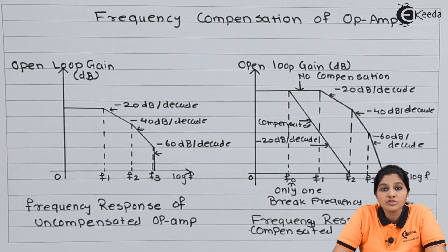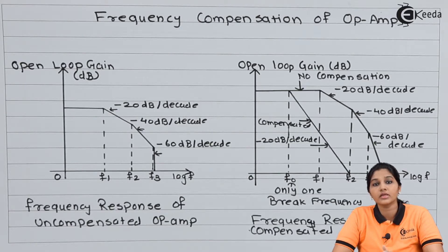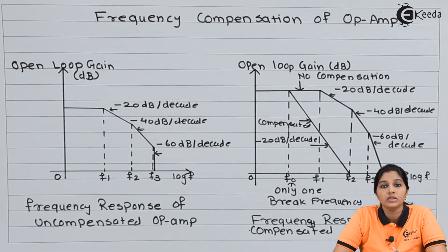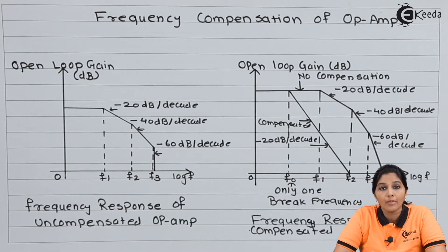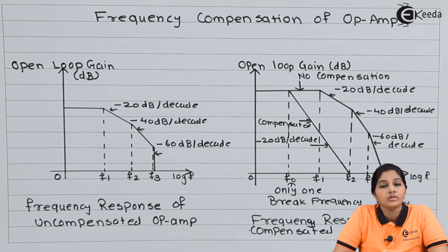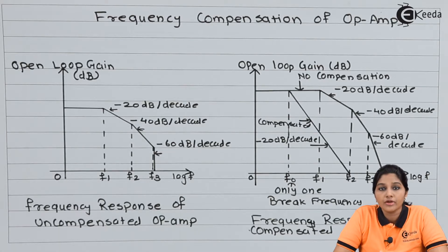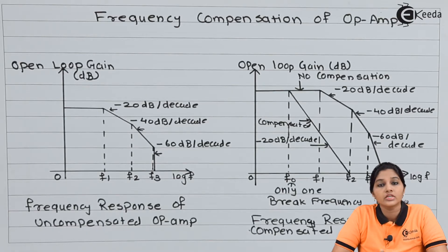In case of compensated op-amp, an external capacitor is connected so that we can have only one break frequency and the op-amp becomes a compensated one. Therefore, the technique used to convert multiple break frequencies into a single break frequency is called frequency compensation of op-amp.